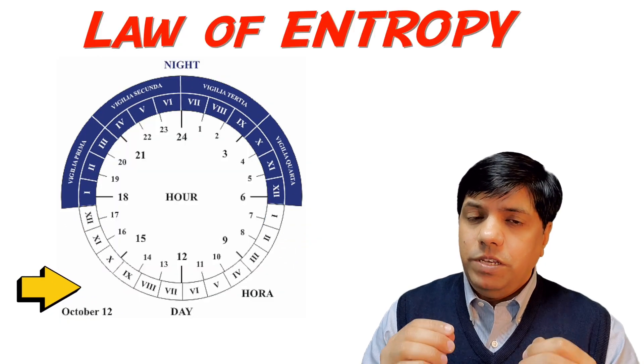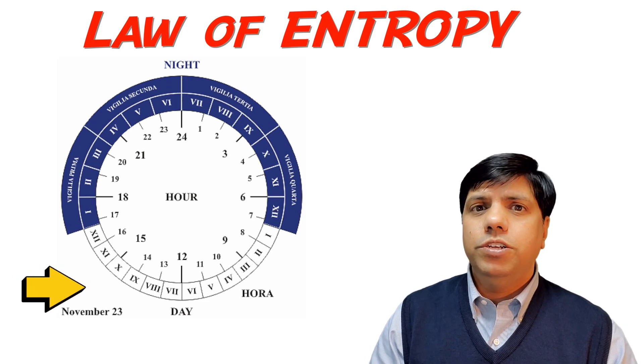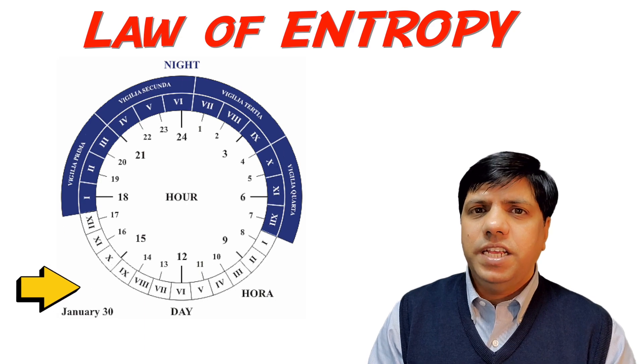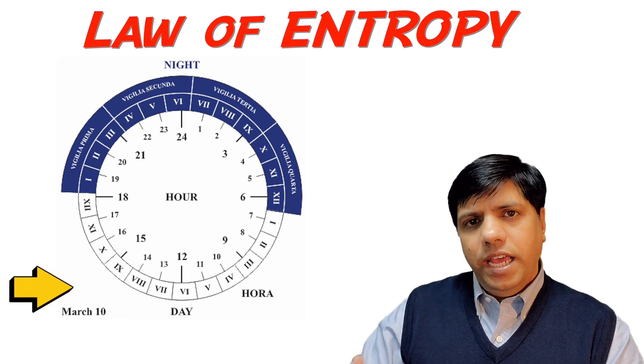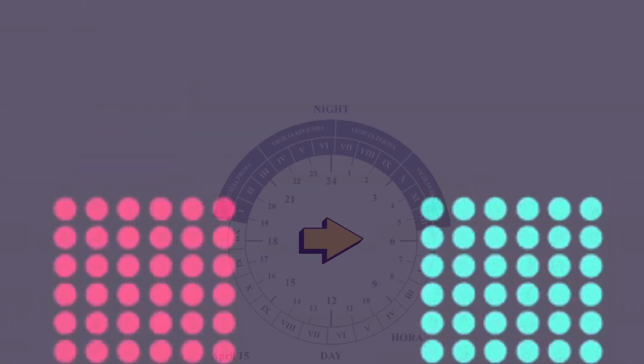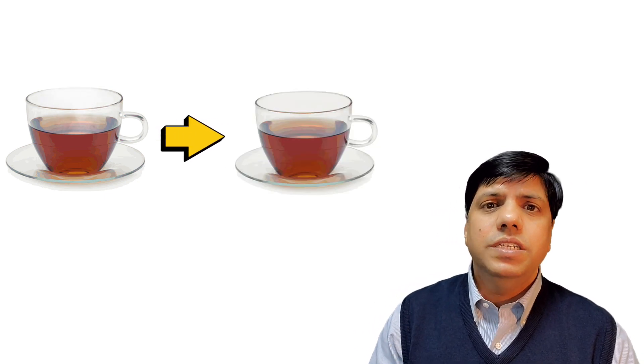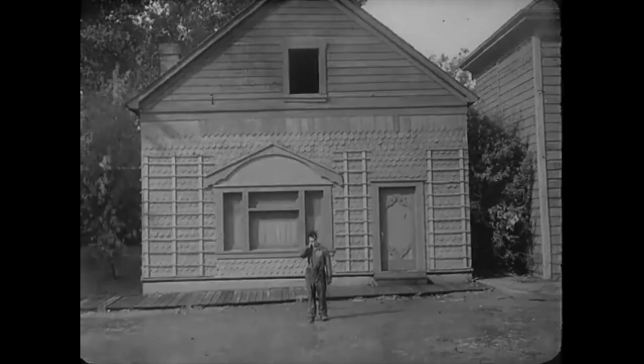The law of entropy is the only law in physics that actually talks about the passage of time. So basically what it says is things tend to go from orderly to disorderly as time passes. For example, a hot cup of tea, if you leave it on a table unattended, uncovered, after some time it loses heat, it gets cold.